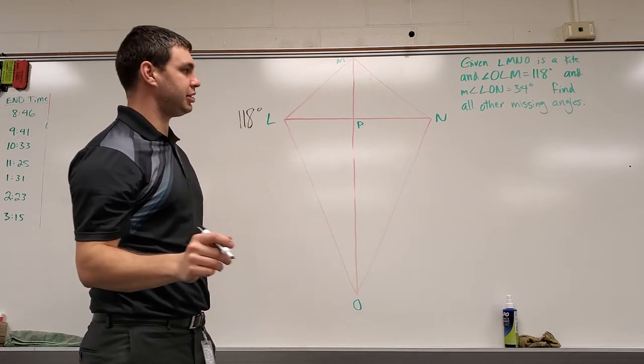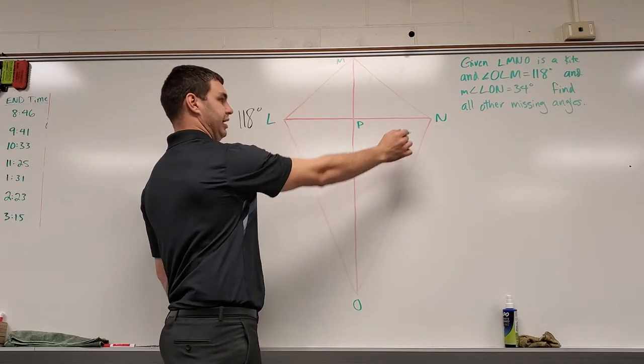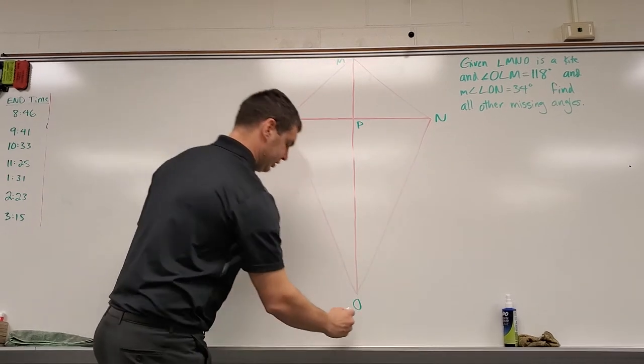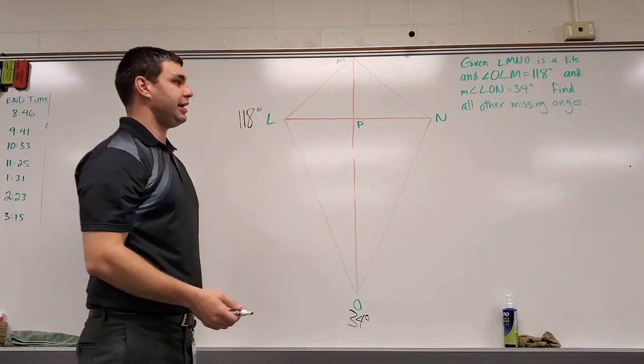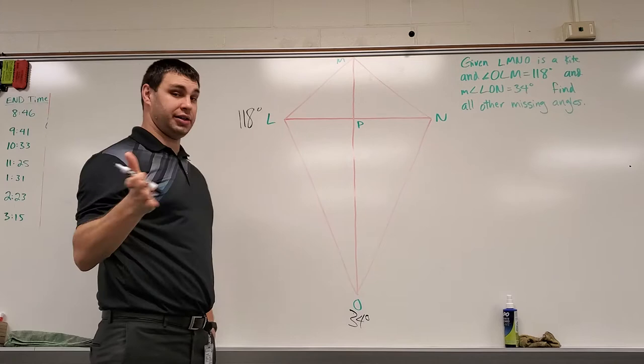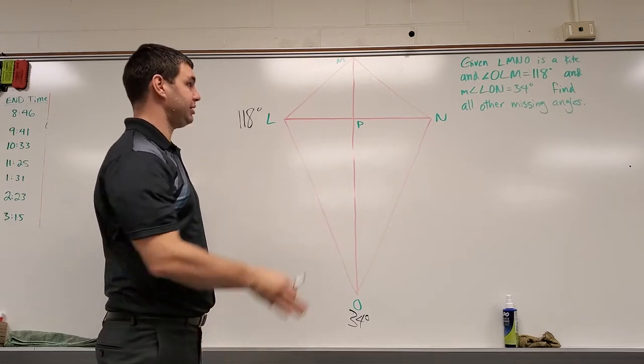And the measure of angle LON is 34 degrees. Again, I'll put that out here because there's two parts of that angle. It asks us to find all the other missing angles in this kite.